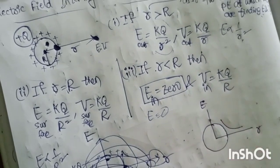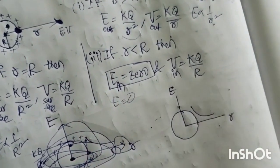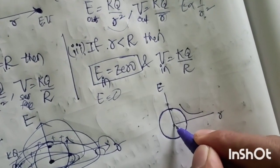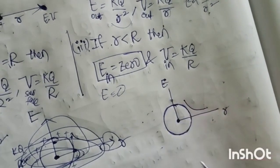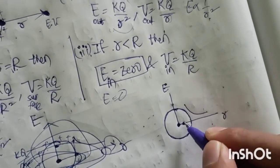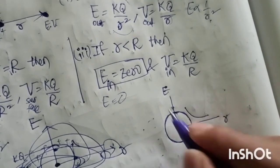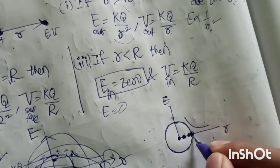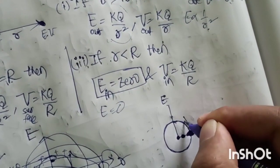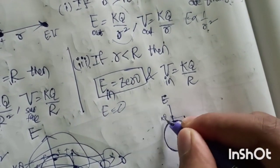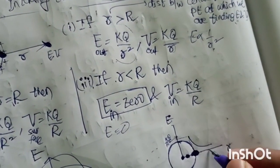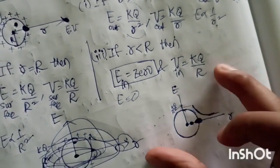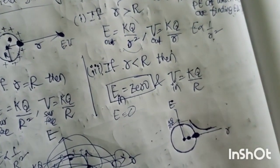Looking at the graph for the hollow sphere: inside the sphere E is zero everywhere. At the surface point, E jumps to a maximum value of kq by R squared. Then beyond the surface, E decreases as r increases. The potential V graph will be shown separately.